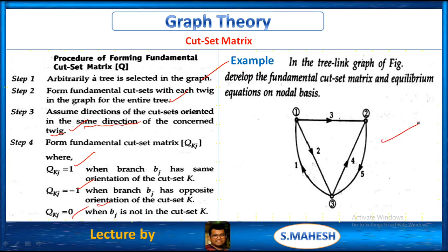This is the given graph. From this, we have to get the fundamental cut set. First, we have to get the tree — a combination of twigs and links. The graph has nodes 1, 2, 3, and I would like to select the tree which covers all nodes.